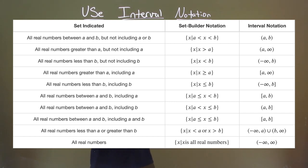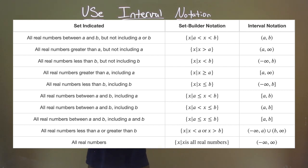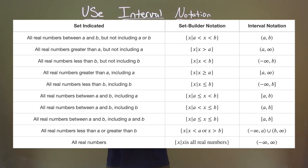All real numbers less than b but not including b: x such that x is less than b, and we have parentheses negative infinity comma b. A quick note: whenever you have infinity you have to have parentheses because you can't actually equal infinity — that's what the bracket is really showing. It doesn't equal negative infinity or positive infinity, so you put parentheses there.